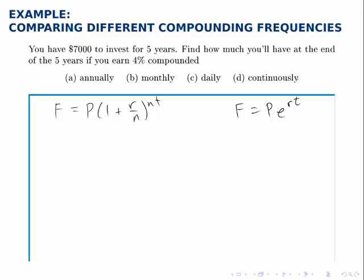For all of them, P, r, and t are all going to be the same. We have the same amount of money, the same amount of time, and the same interest rate. All that changes for the first three is what n is in the first formula, and then for part d, of course, we'll use the other formula.